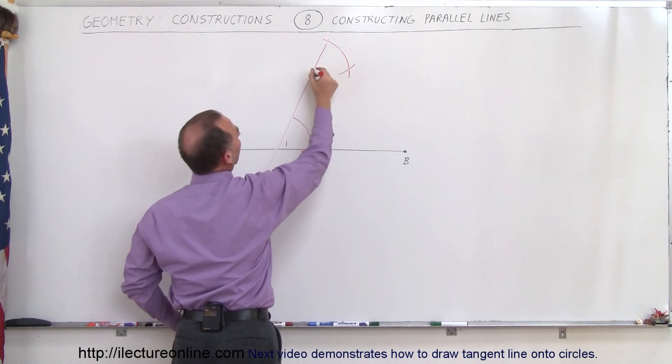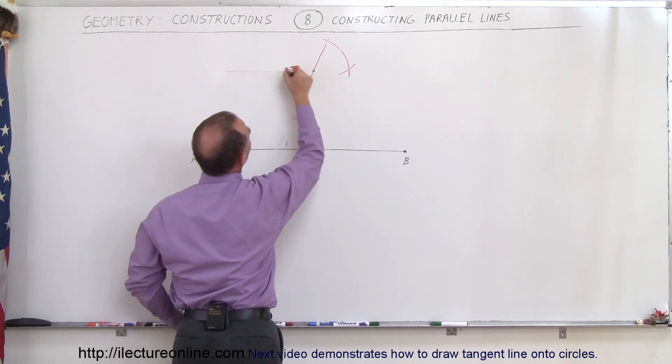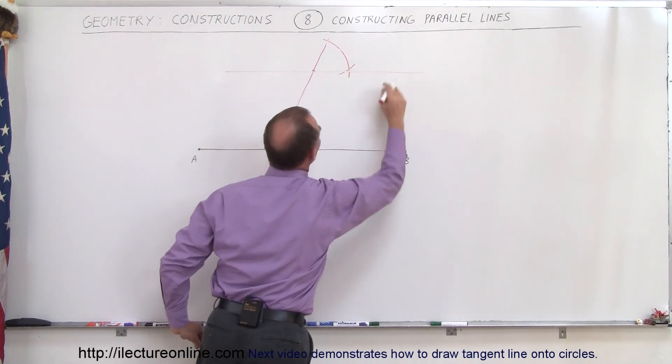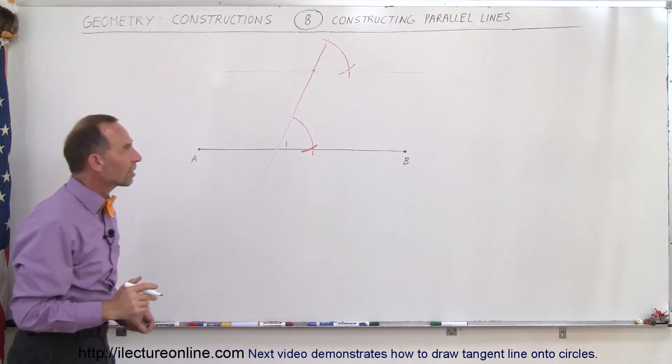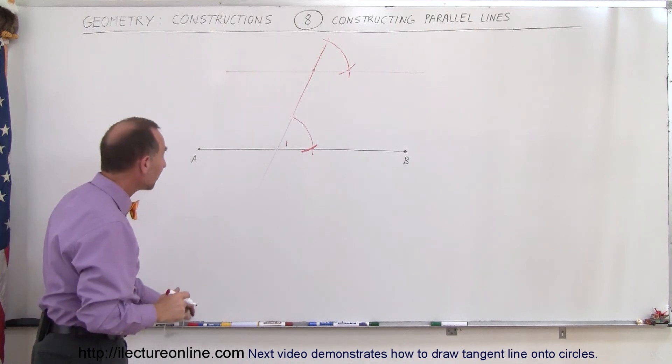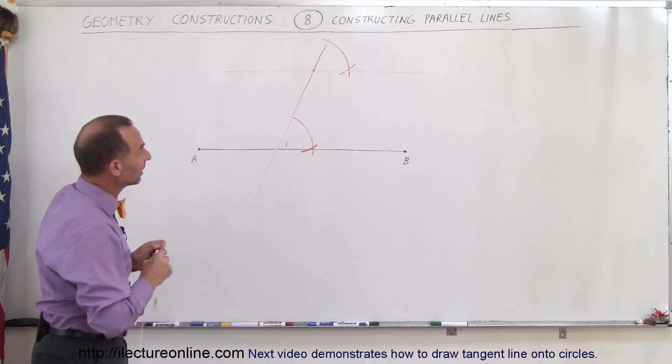I can then draw a line from this point right there to this point. And that will then be the line that's parallel to the first line segment over here. I'm losing some, my pen is not that good anymore.